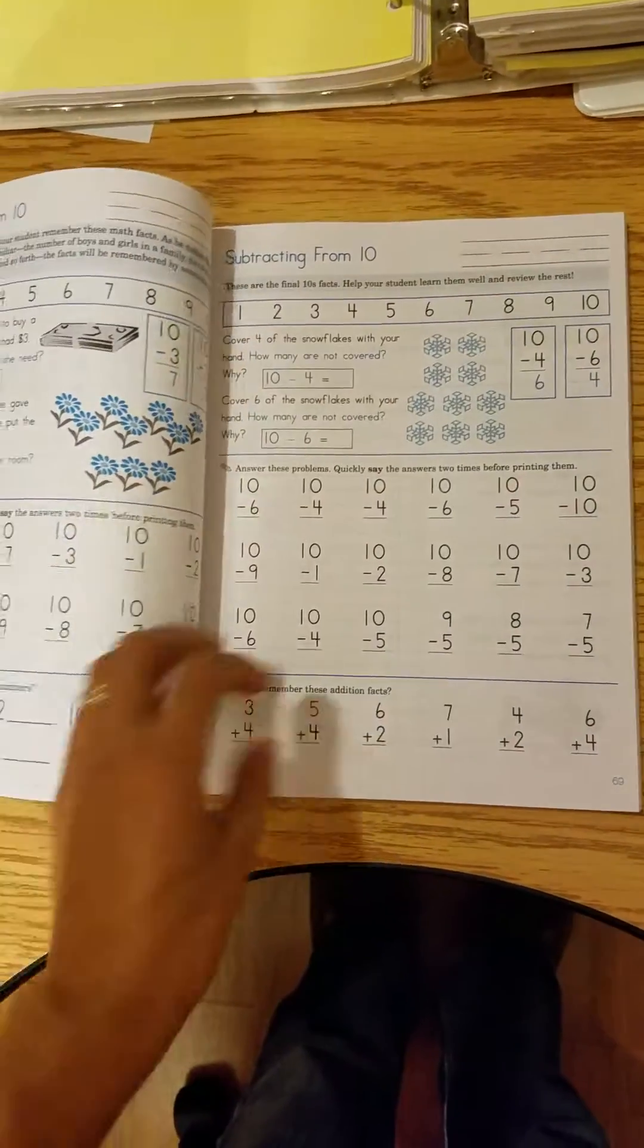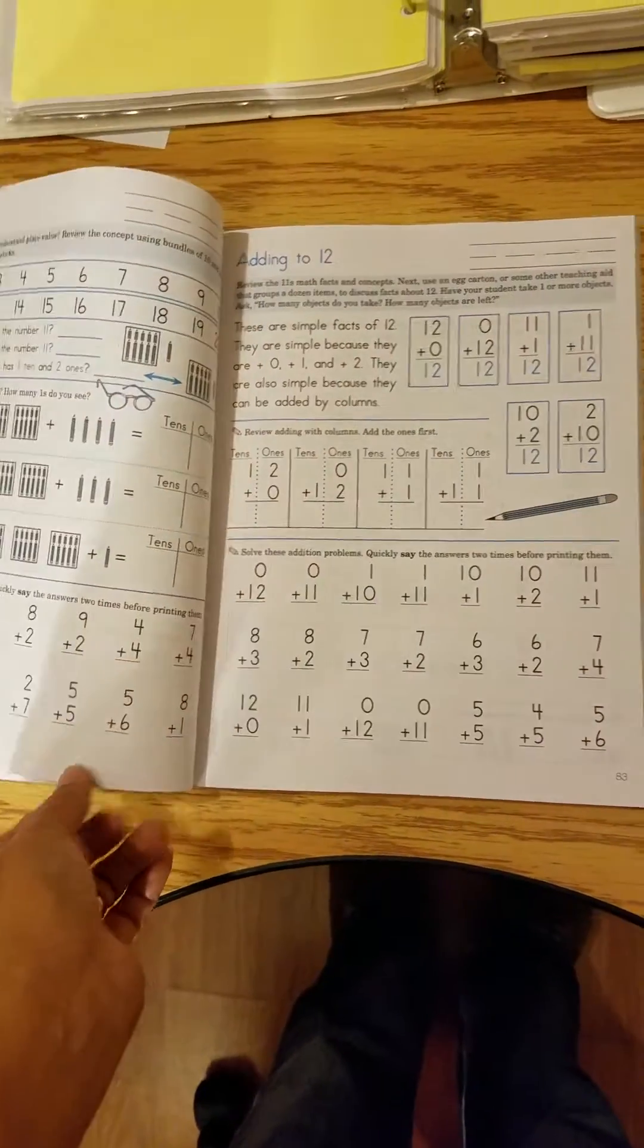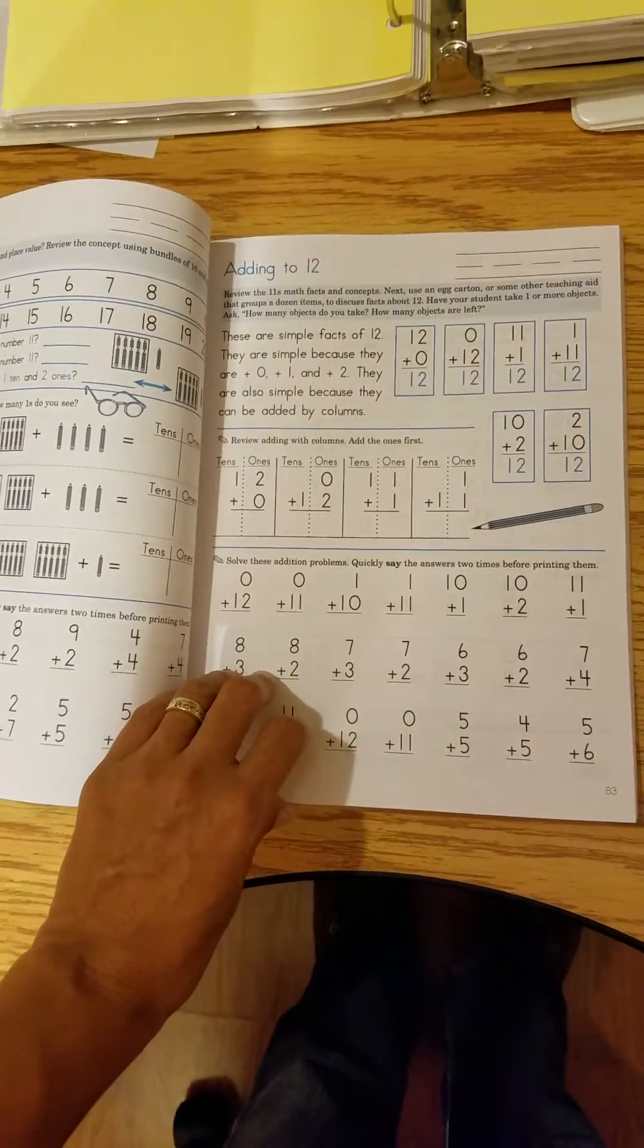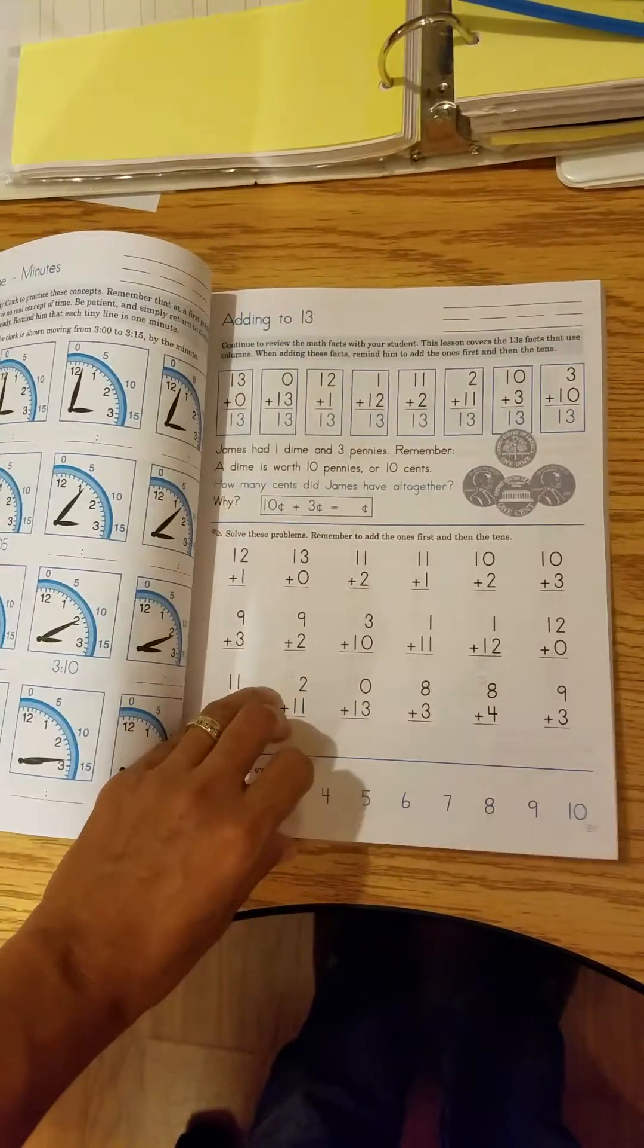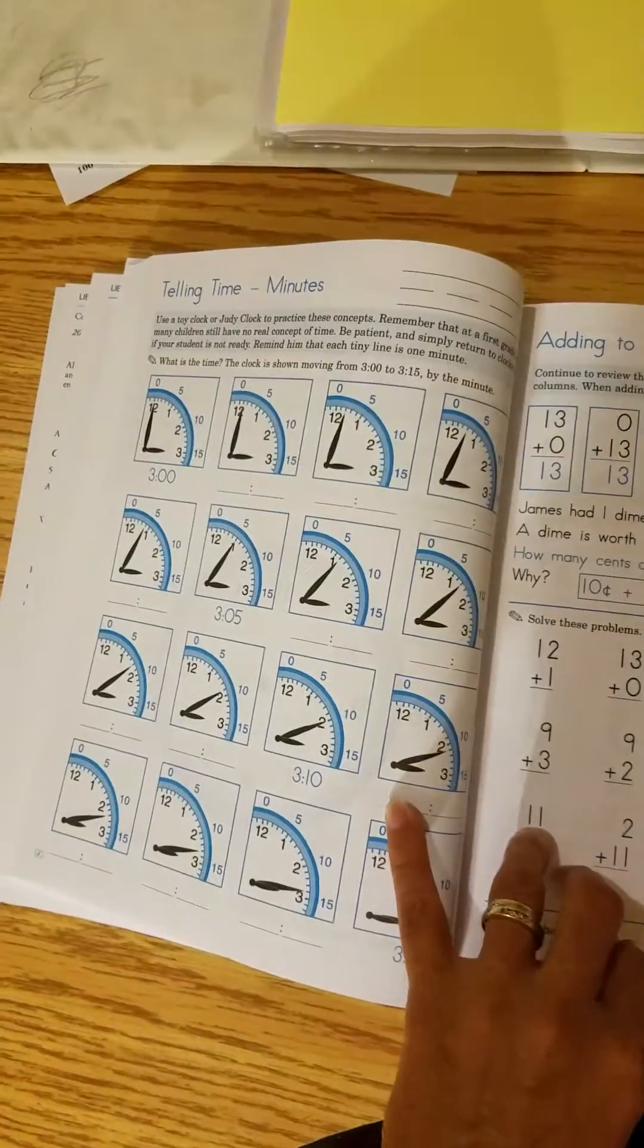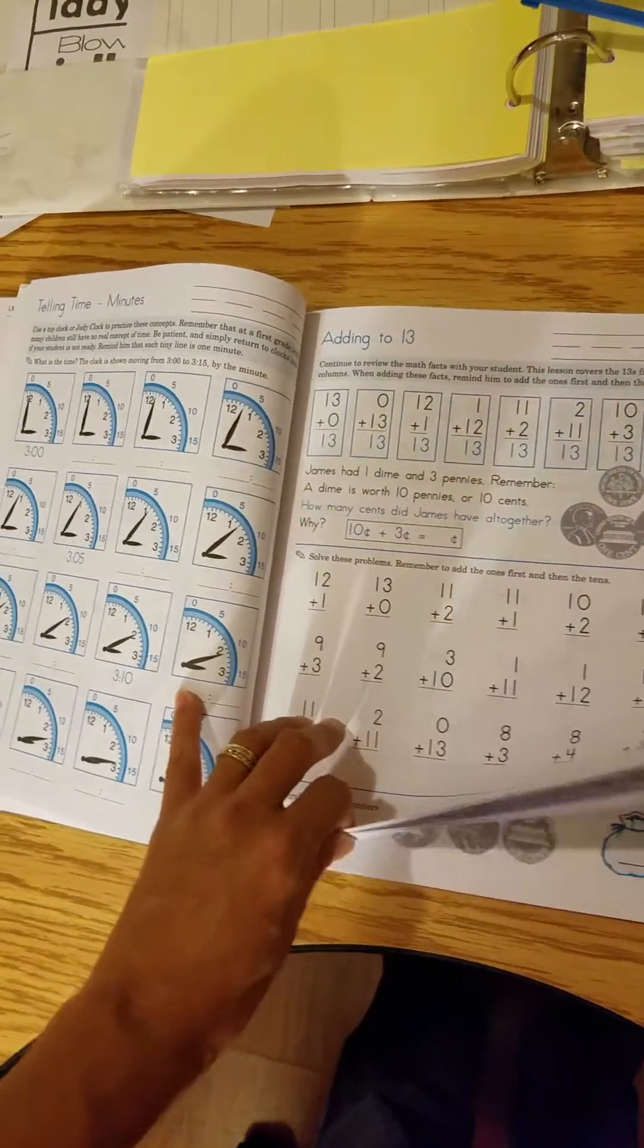Tallies. Okay, so it's going to start going beyond ten. Telling time to the minutes, no longer just by fives.